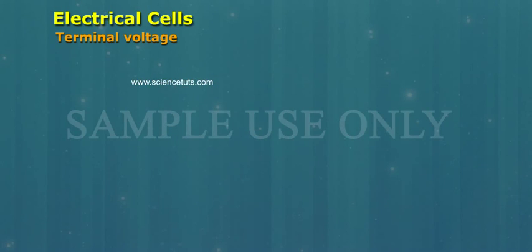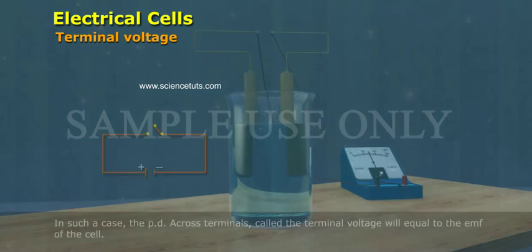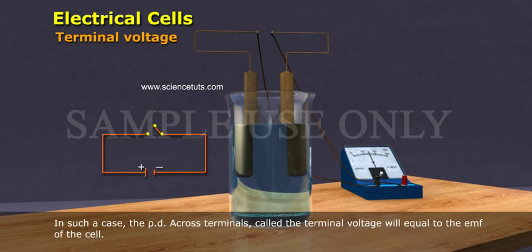Terminal voltage. When no current flows through the cell, the circuit is said to be an open circuit. In such a case, the potential difference across the terminals, called the terminal voltage, will equal the EMF of the cell.